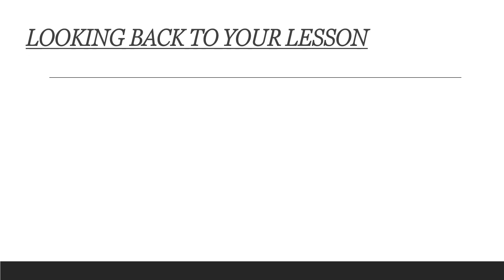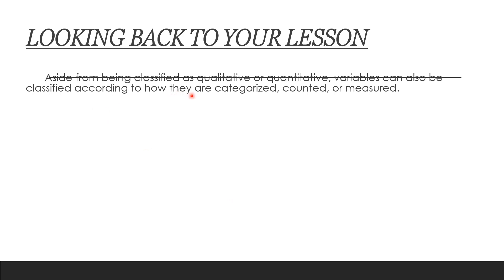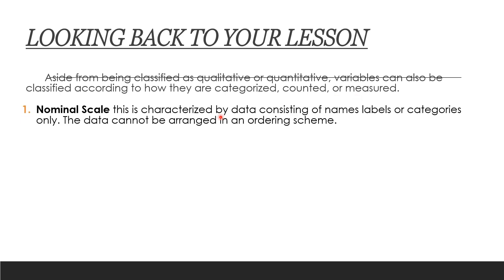Looking back at our lesson: aside from being classified as qualitative or quantitative, variables can also be classified according to how they are categorized, counted, or measured. We have the nominal scale, which categorizes characteristics by data consisting of names, levels, or categories only — the data cannot be arranged in an ordering scheme.